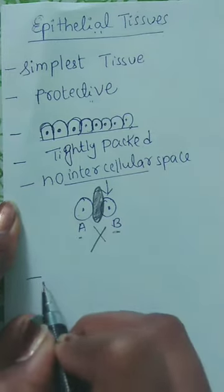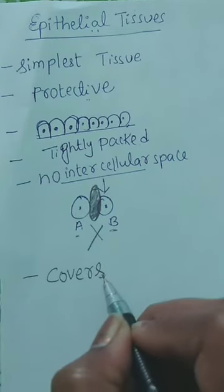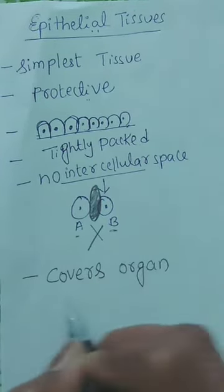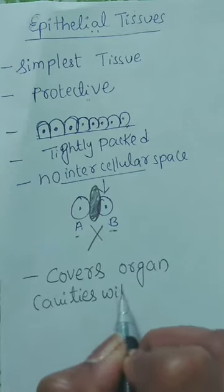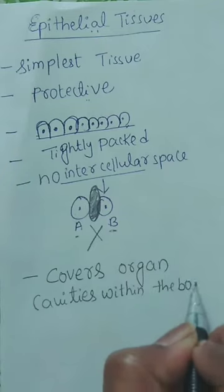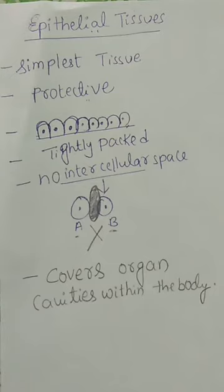Epithelial tissue covers most of the organs and cavities within the body. It forms a barrier to keep different body systems separate. Epithelial tissue plays a very important role in separating the different organ systems of the body.